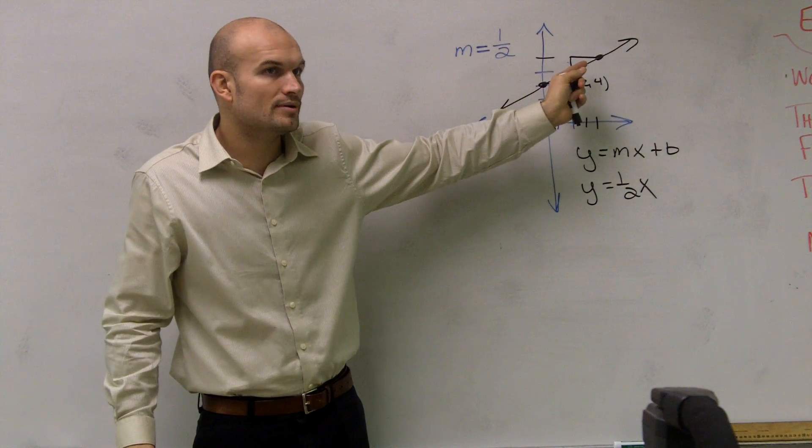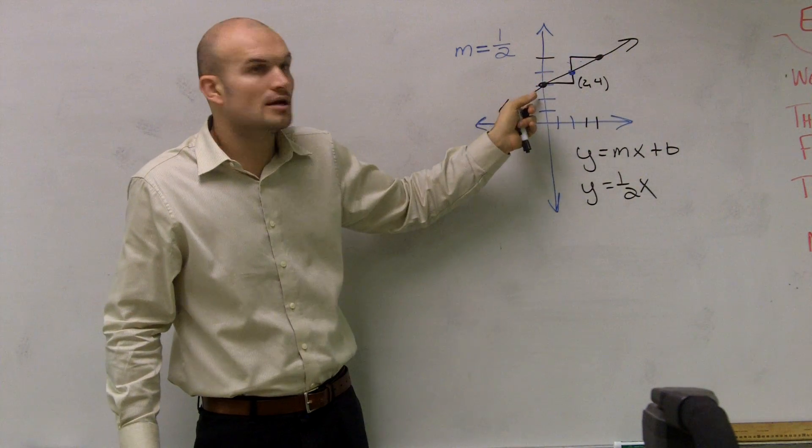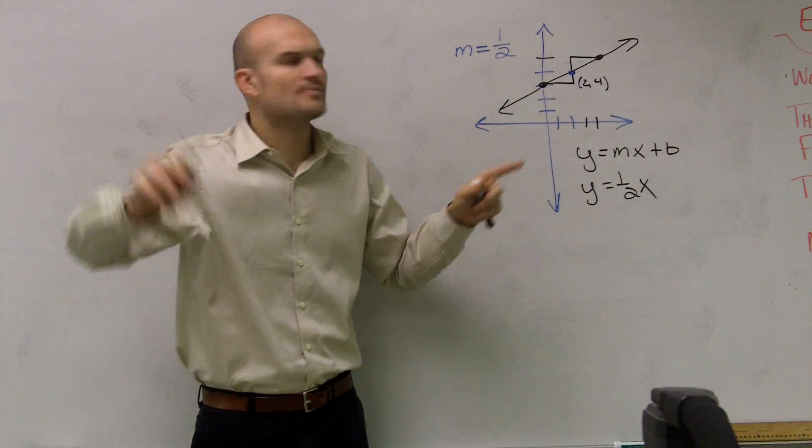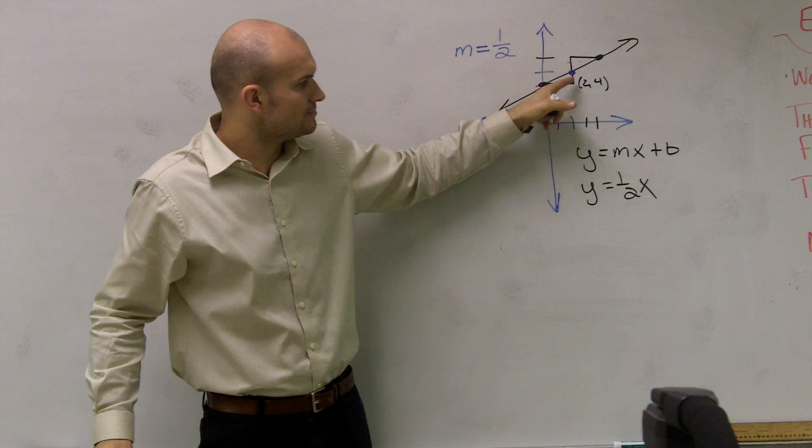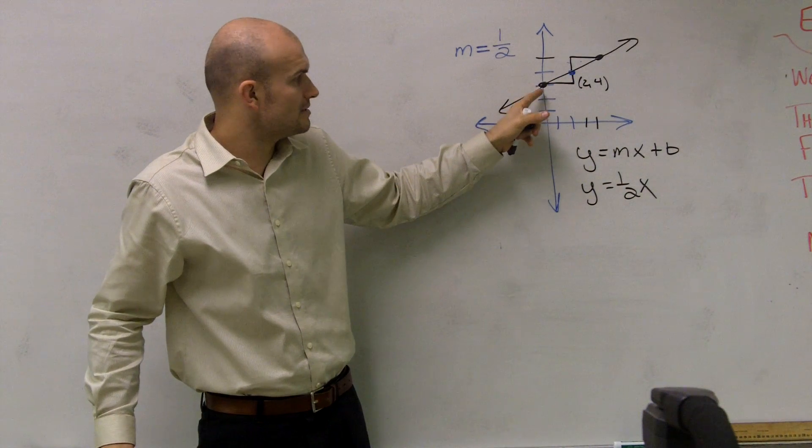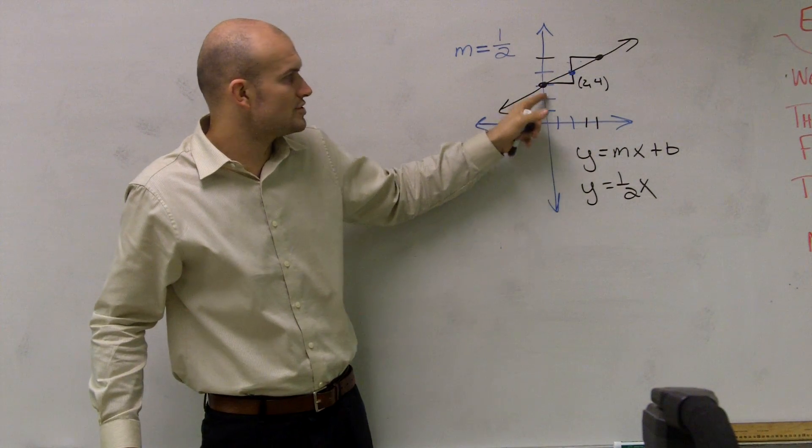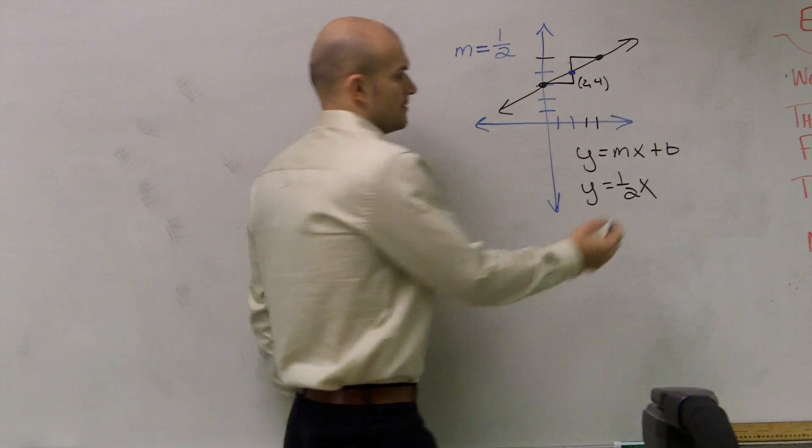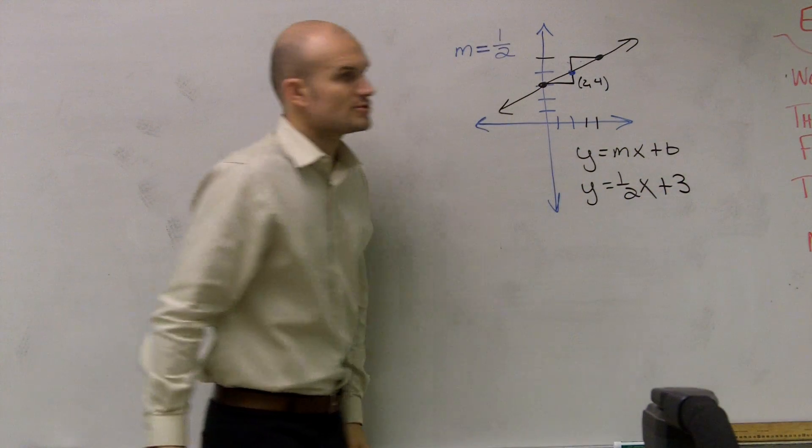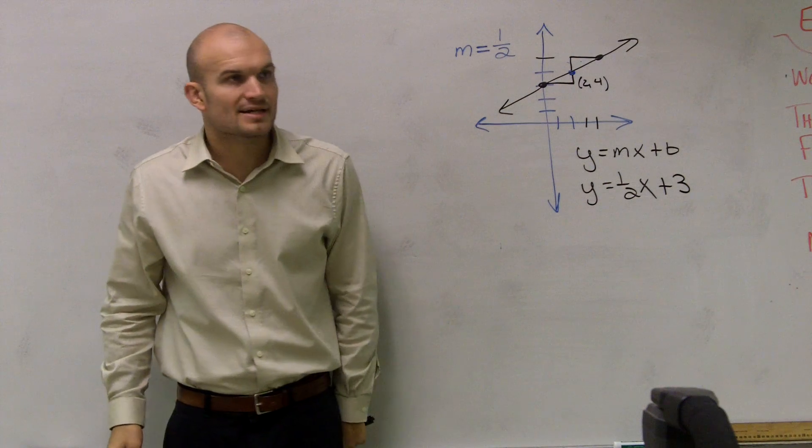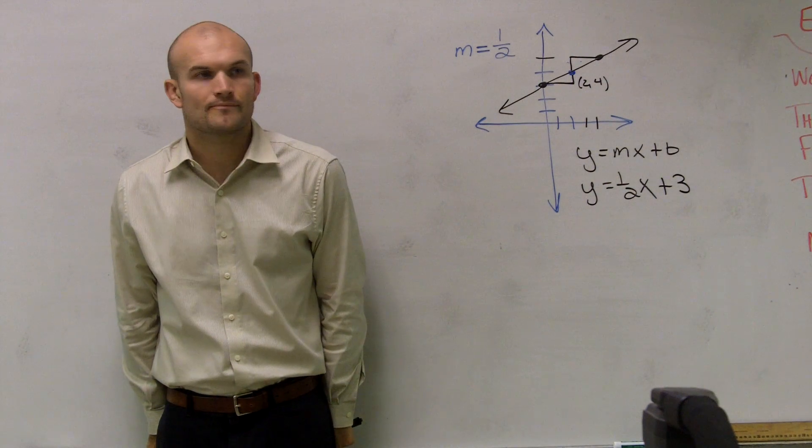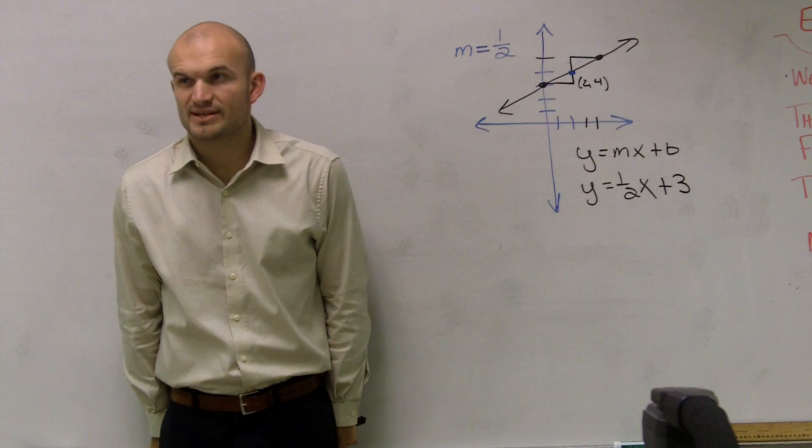You graphed it and said, oh, when I follow the slope, what I see is—Fahad, could you move over there, please? What you notice is the y-intercept is going to equal 1, 2, 3. So you have y equals 1 half x plus 3, OK? Make sense?